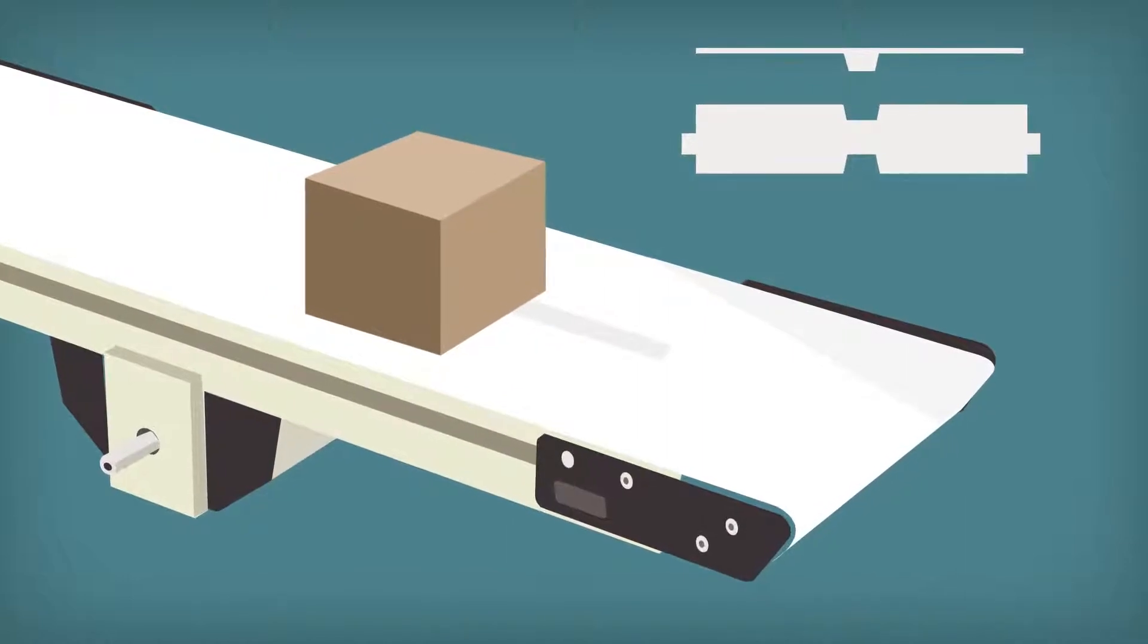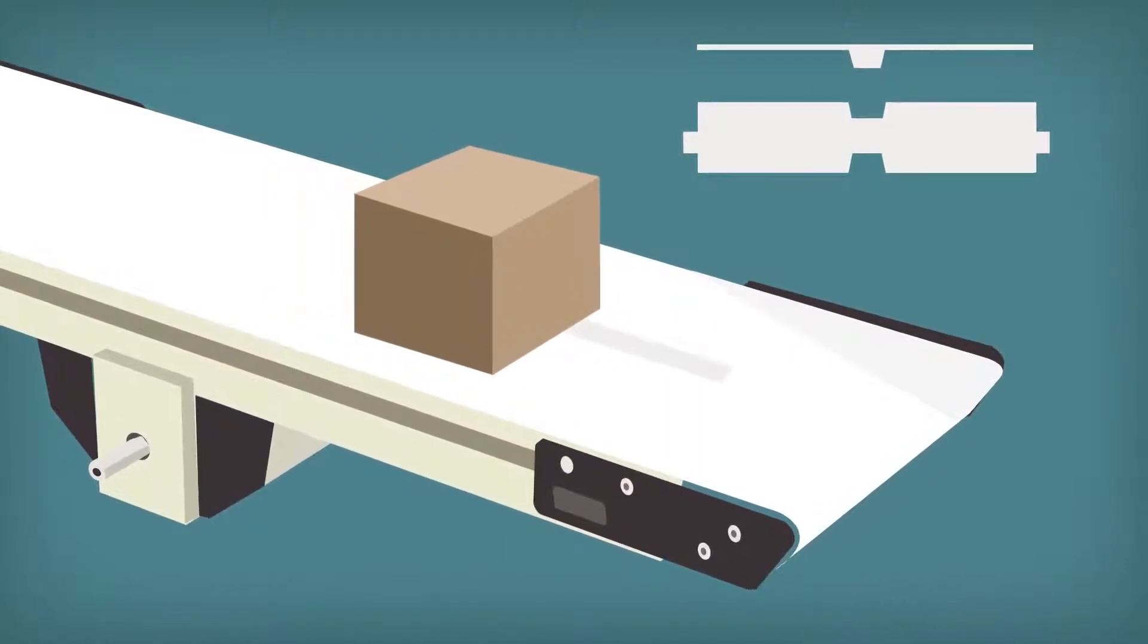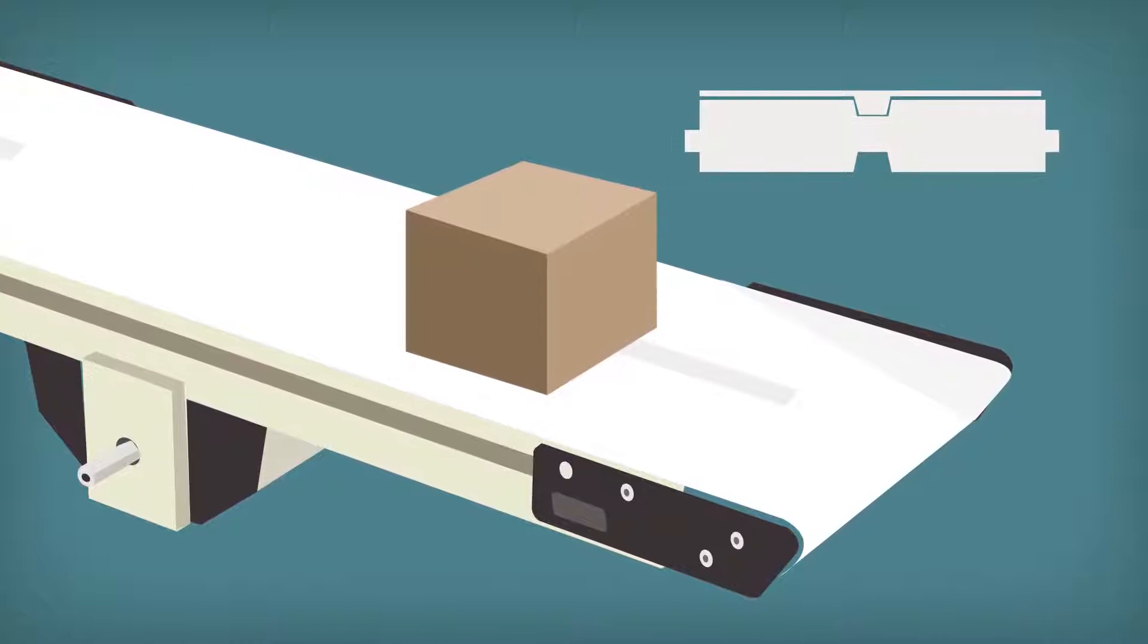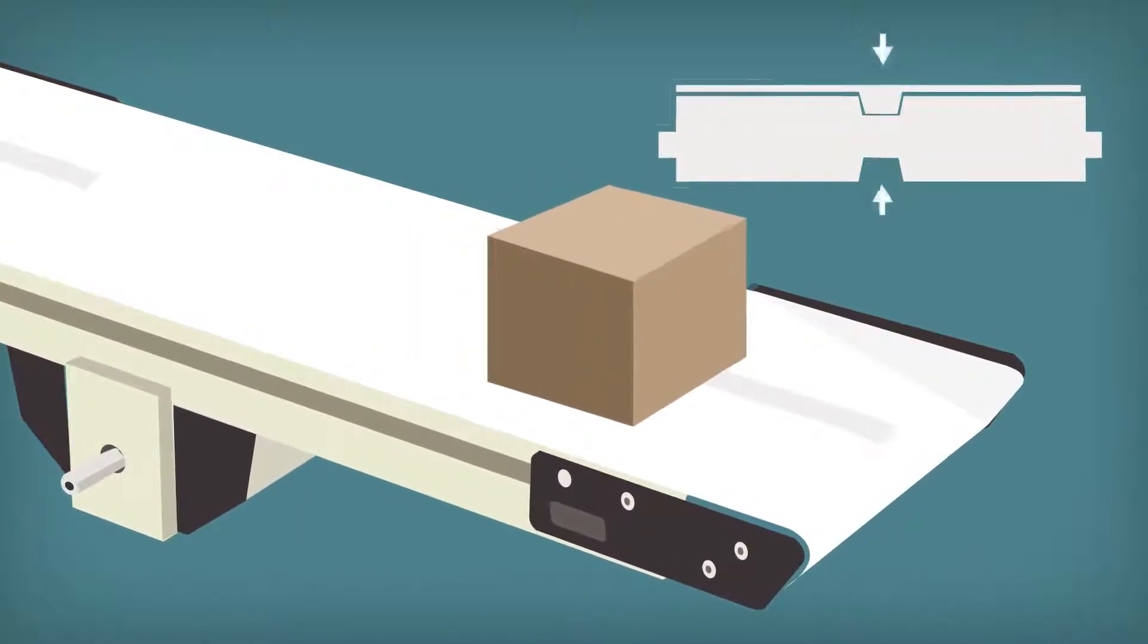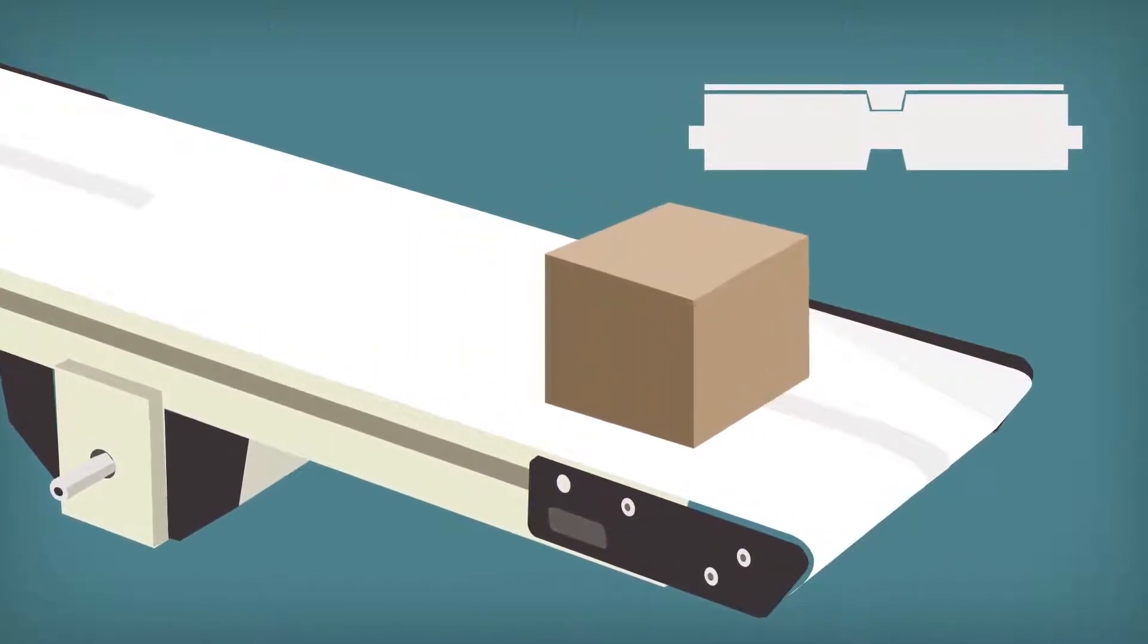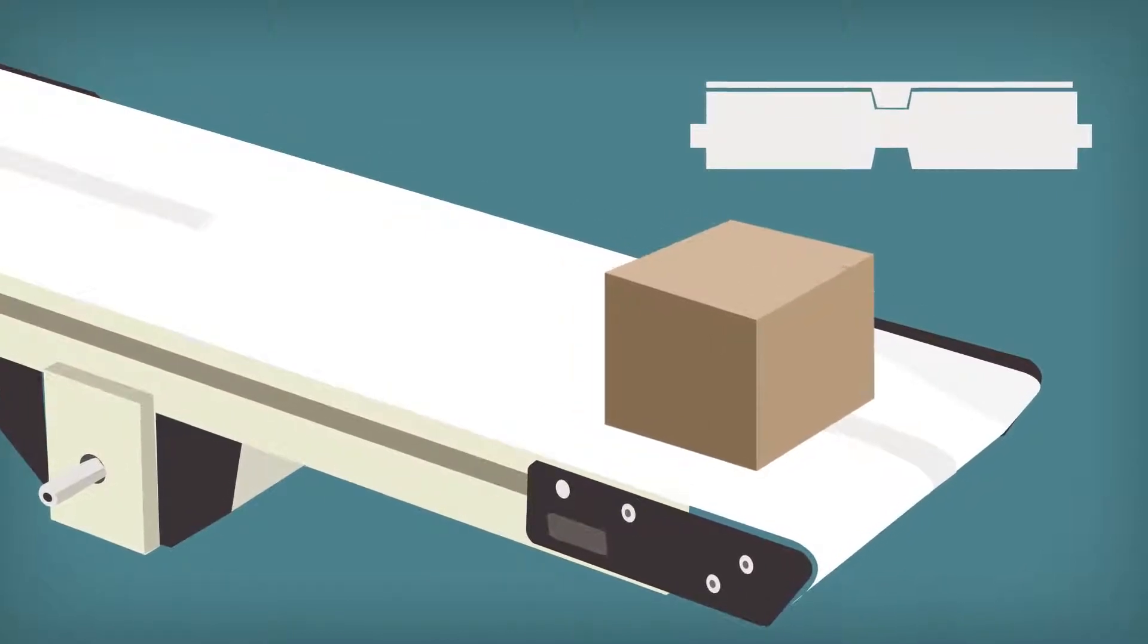V-Guided Tracking works by bonding a continuous V-shaped plastic material to the bottom of the belt. This corresponds to V-shaped grooves in both the end roller and bed plate, providing belt tracking the entire length of the conveyor.